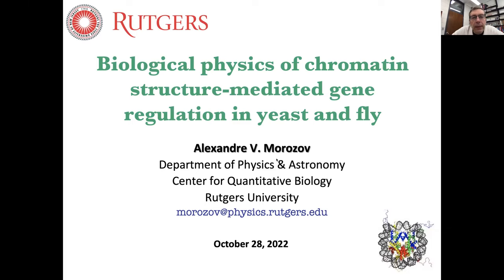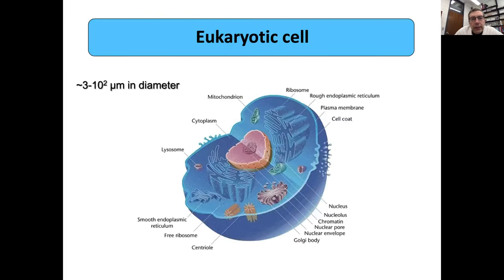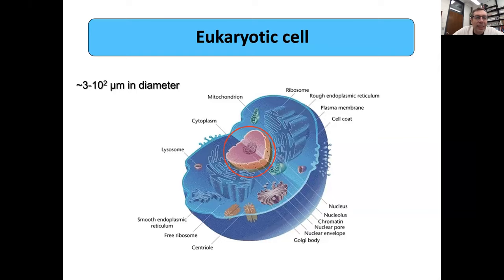Let me start from the beginning and show you a cell. Inside cells, which come in many different types, there's a nucleus — you can see it, it's just a textbook picture — and there's chromatin shown a little bit like spaghetti inside the nucleus. These cells range from a few microns to maybe 100 microns in diameter, and the nucleus is still smaller.